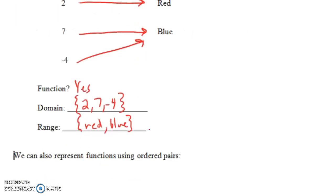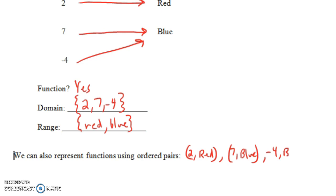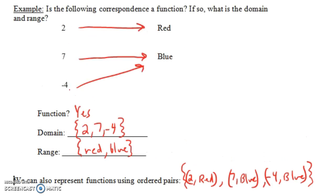We could also represent this function using ordered pairs. The fact that 2 corresponds to red means we could write the ordered pair (2, red), and we could write the ordered pairs (7, blue) and (-4, blue). We could list this as a set of these three ordered pairs. Notice we're getting the exact same information from the set of ordered pairs as we do from the arrows in the picture.